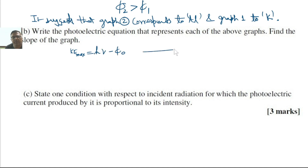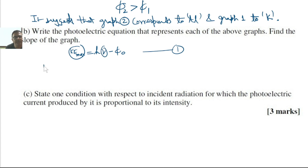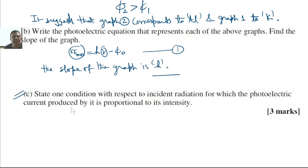All the symbols have their usual meaning. H is Planck's constant, mu is the frequency of the incident photon, and phi naught is the work function of the metal. This is a linear equation between kinetic energy and frequency, and hence the slope of the graph is H, the Planck's constant.